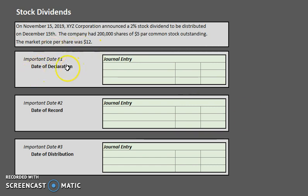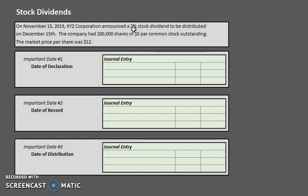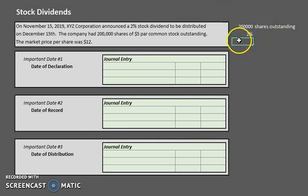For the date of declaration, let's first analyze what a 2% stock dividend means. Essentially it tells us how many shares we are actually going to be giving out. A 2% stock dividend means 2% of the outstanding shares. So if we originally had 200,000 shares outstanding and we're giving a 2% dividend, the number of shares we'll be giving out is 200,000 times 2%, which equals 4,000 shares.